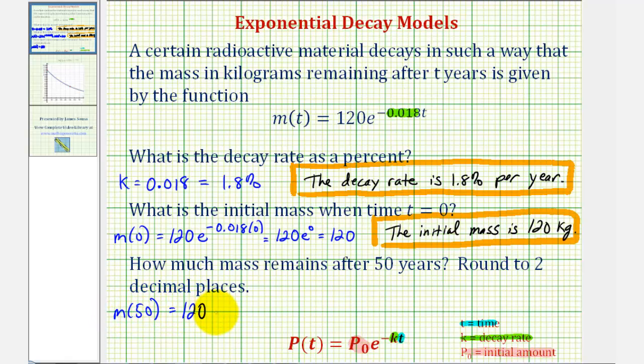This would be 120 times e raised to the power of negative 0.018 times 50. And now we'll go to the calculator to get our decimal approximation.